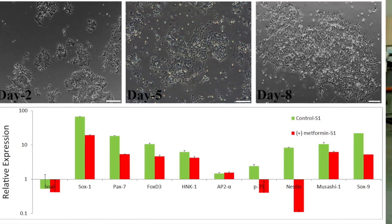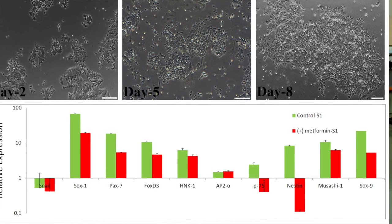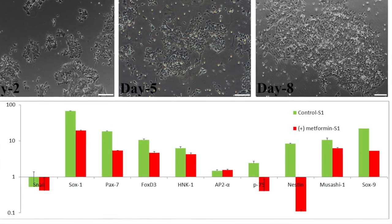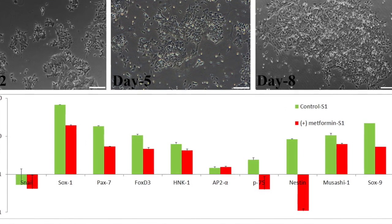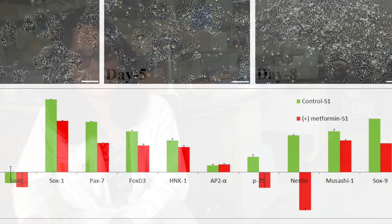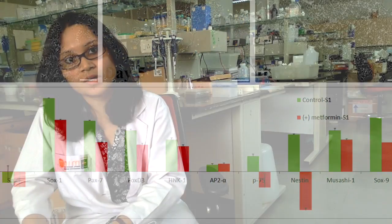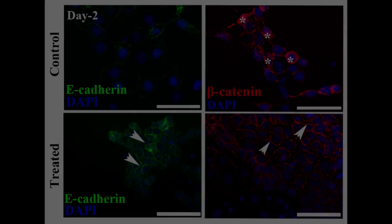We observed a decreased expression of key markers like SNAIL, SOX9, HNK1, P75, CDC42, MMP2, and MMP9, with a contrasting increment in the expression of a typical non-neuroepithelial gene, E-cadherin.